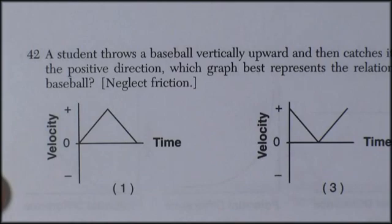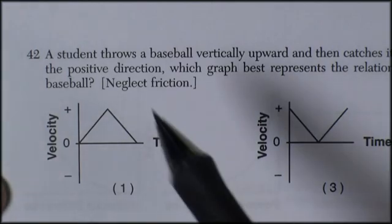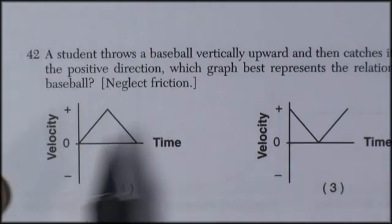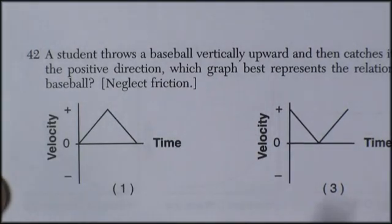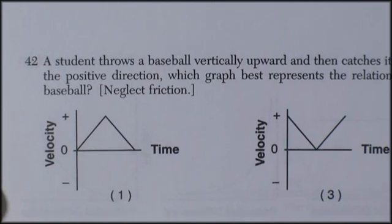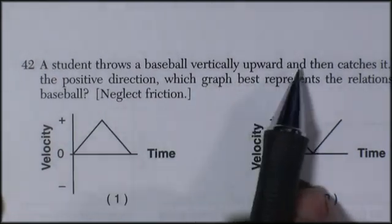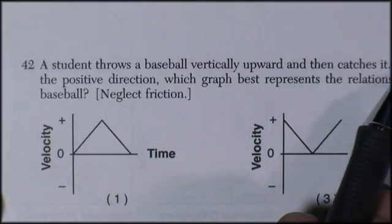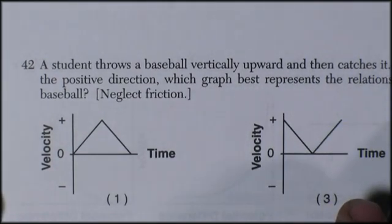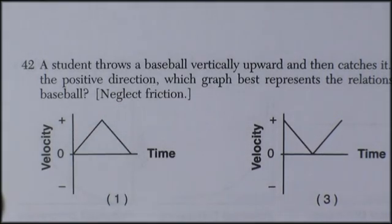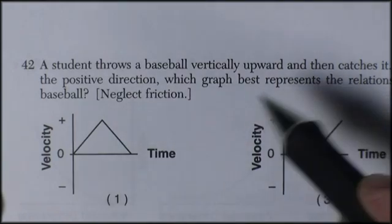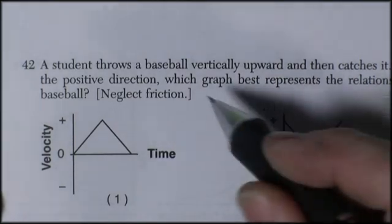Okay, we're on the June 2010 exam. This is page 9. Question 42. Now these go the full length of the page, but I'm only going to show enough to get the answers here. A student throws a baseball vertically upwards and then catches it. If vertical upwards is considered to be the positive direction, what graph best represents the relationship between velocity and time for the ball? Well, let's think about this.